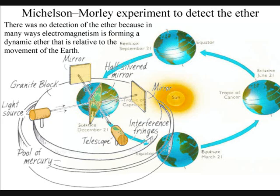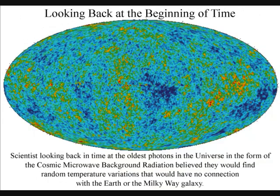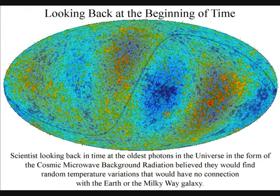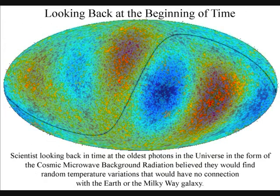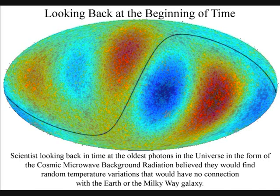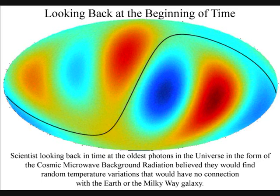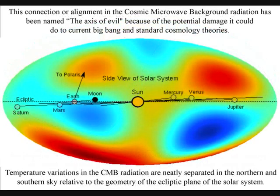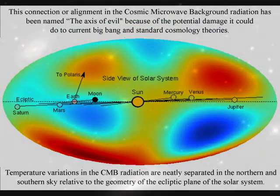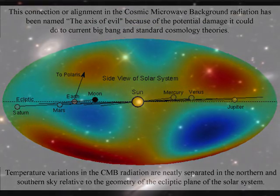This could also explain why scientists have found an axis in the cosmic microwave background radiation that runs back through space and time that is relative to the elliptical plane of our solar system and the local group of galaxies that include the Milky Way galaxy.